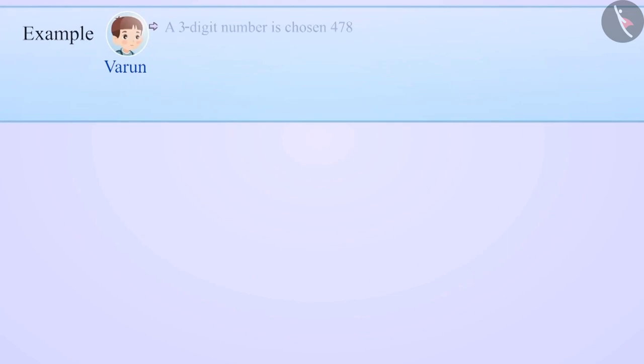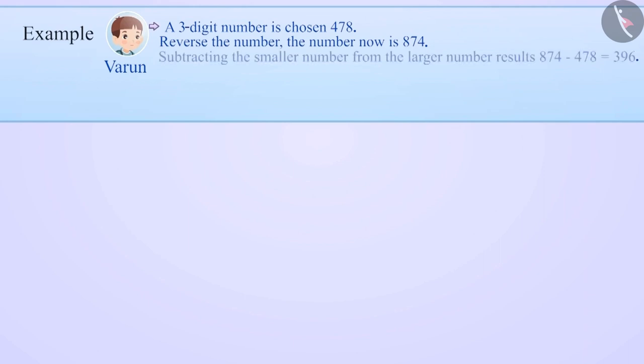Varun selected a three-digit number 478. He reversed the number, which gave him 874. He then subtracted the smaller number from the larger number and obtained the result 874 minus 478, which is equal to 396.